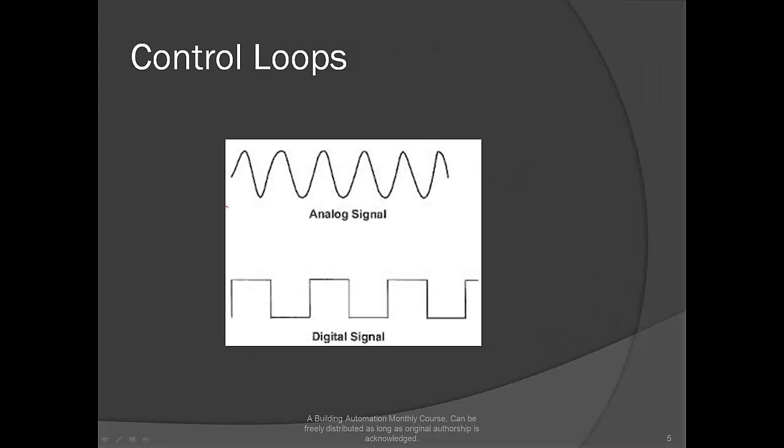Control loops. So right here is an analog signal. Now, analog signals are typically pneumatic, typically resistive, things like that. Digital signals are typically just, as they say, digital. For example, 0 to 10, 24 volts AC, etc. 0 to 15 psi, those kind of things. There's not much more I'm going to go into. Just realize that there's analog and there's digital.